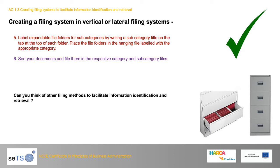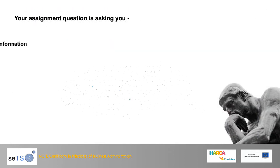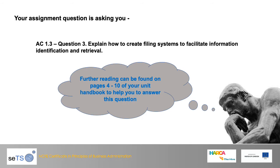Can you think of other filing methods to facilitate information identification and retrieval? Try researching some other systems. Assignment Question 3 asks you to explain how to create filing systems to facilitate information identification and retrieval. We've given you vertical and lateral systems — can you think of any others? Further reading can be found on pages 4 to 10 of your unit handbook.